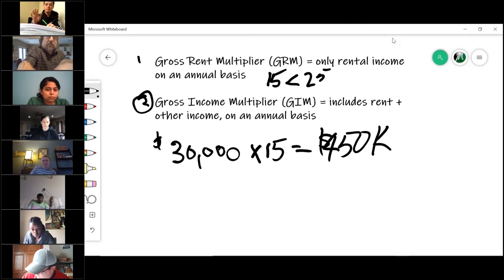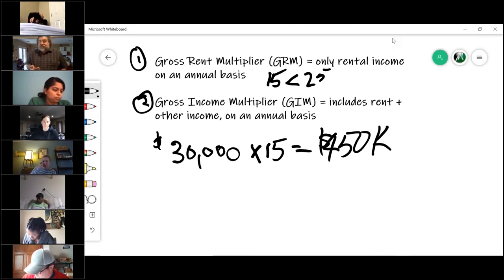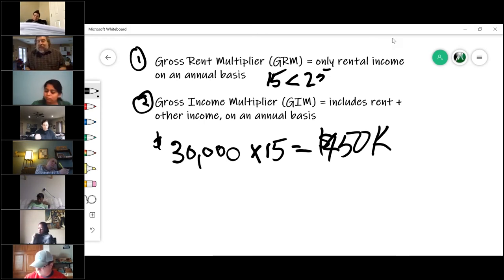Now there is a second one, and here's where the contestation comes from. There's this thing called a gross income multiplier. Because remember, some properties generate other income besides just rent.